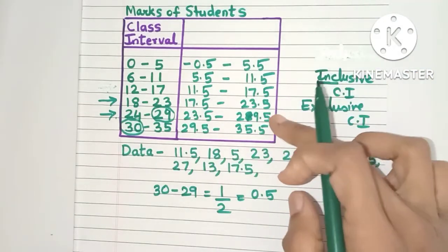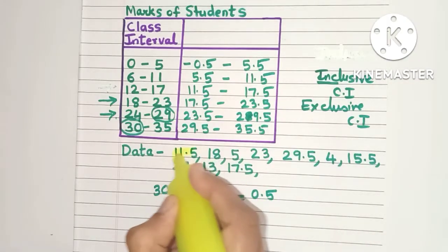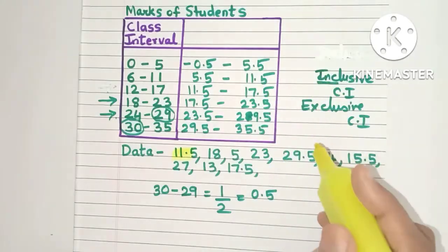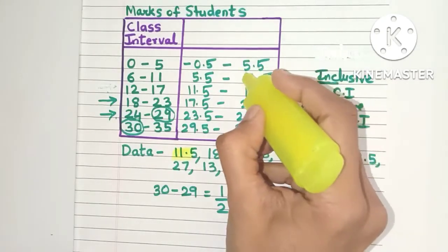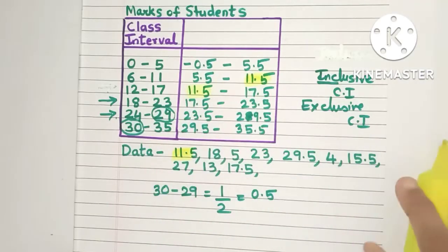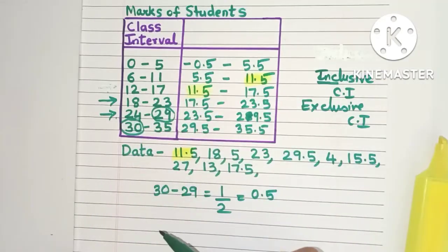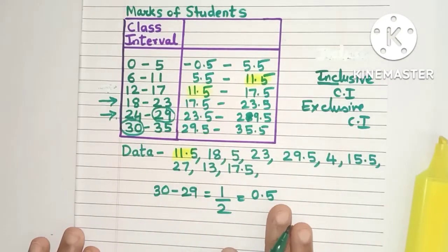Now this new class interval column is called the exclusive class interval. Now let's see if our marks 11.5 is getting represented here. So as you can see here 11.5 is coming over here and it is coming over here. So the problem that we previously had where 11.5 was not coming at all in any class interval, that problem is solved.